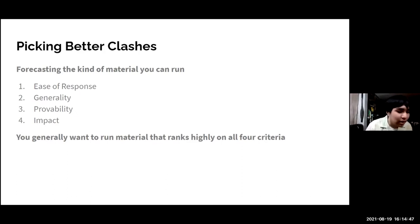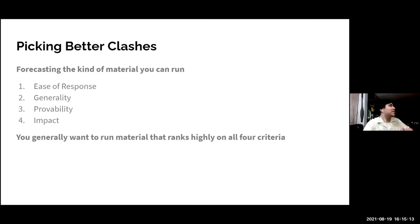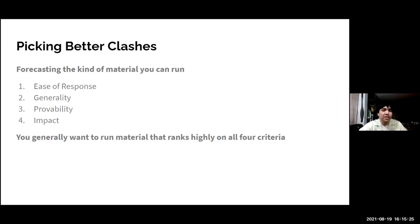Second, pick material that is generalizable. You don't want material that can be marginalized to a very small set of people or circumstances — you want things to be likely, because the less likely they are, the less likely they are to be credited by the judge. You want material that can be proven to be happening often, or where harms have already happened. The buzzword is 'structural' — prove it is inherent to the motion, not just coincidentally correlated.